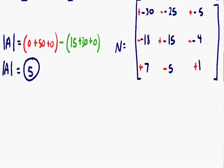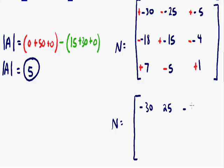Now if we simplify matrix N by applying those signs: positive and negative 30 gives negative 30. Negative times negative 25 gives positive 25. Positive times negative 5 stays negative 5. Negative times negative 18 gives positive 18. Positive times negative 15 stays negative 15. Negative times negative 4 gives positive 4. Positive 7 stays positive 7. Negative 5 stays negative 5. And positive 1 stays positive 1.